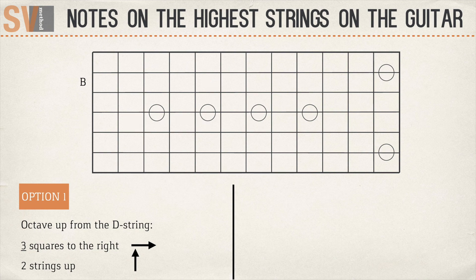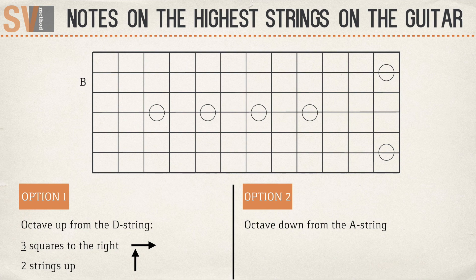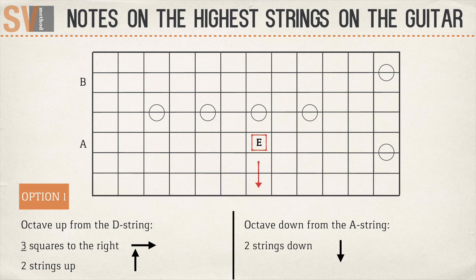If you'd like to keep octaving in the way that's been shown in the first video, then you can go for the next option. Option 2: you octave down the notes on the A string. This also works for guitars with a low B string. If I want to play the note E on the B string, I'll first search for the note E on the A string and then slide two strings downward and two squares to the left, in the direction of the head.